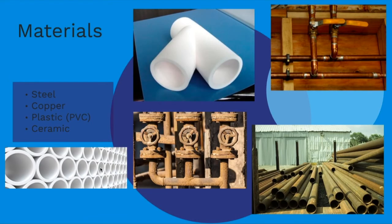Now what type of materials do we have? We already understand what pipes are — they are typically long. The most common material is steel, typically used in the chemical industry. We also have copper ones, which are used for natural gas, maybe in home applications or more specific applications. Copper is very expensive compared to traditional piping. We also have plastics — if the material allows it, we can use PVC or even other types of plastics.